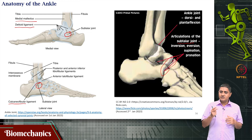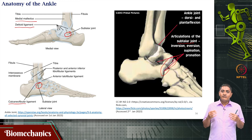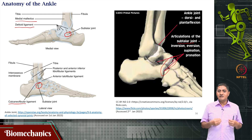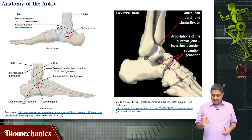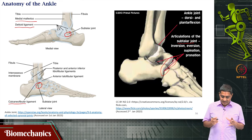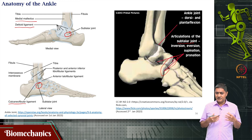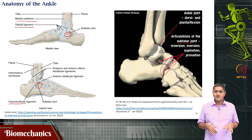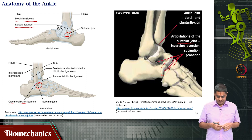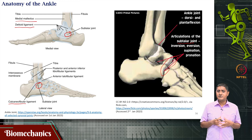In movement science, there are two aspects to studying and rehabilitating movements: one is having the desired movements, and two is preventing movements that are not desired. After this digression, the talocrural joint has only a single degree of freedom as a hinge joint, and the other movements are happening at the subtalar joint — between the calcaneus and the talus — and the other tarsal joints.